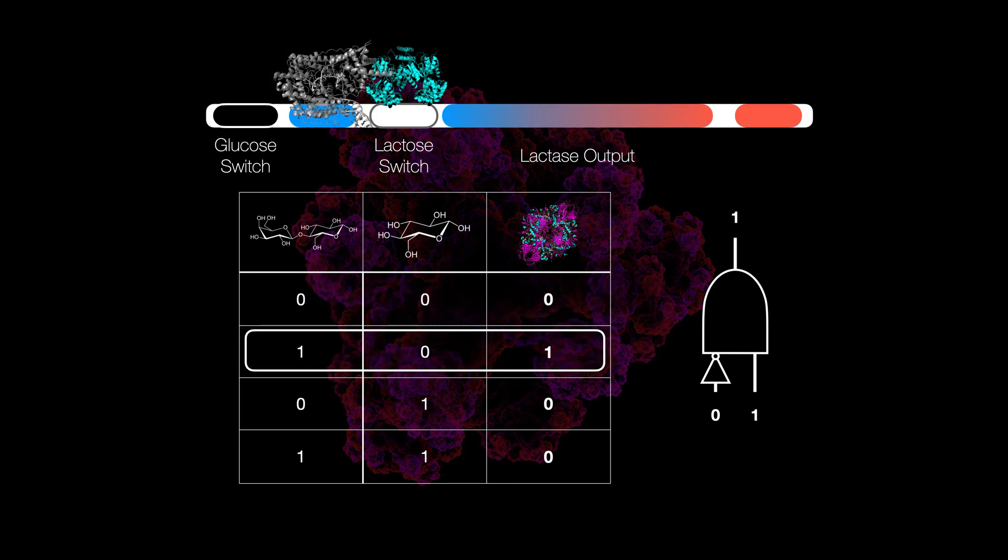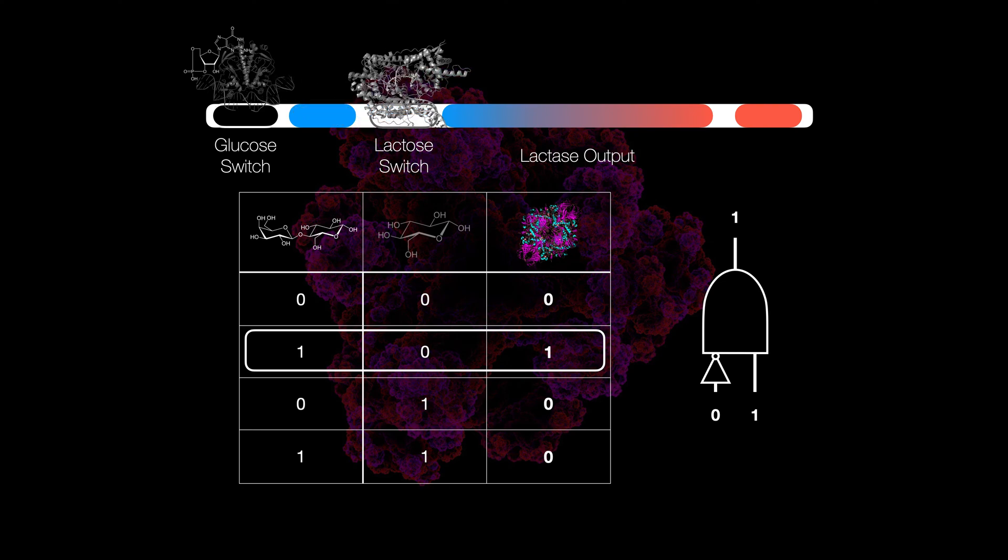Next, when we have no glucose, so it's the same deal. The enhancer binds. However, we do have lactose this time. So the repressor binds the lactose and gets lifted off. And now, you can make the lactase.